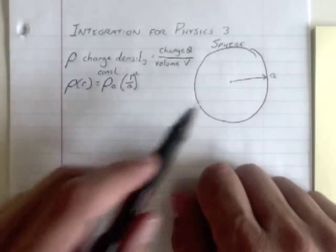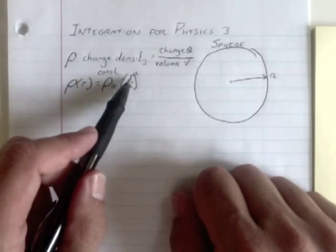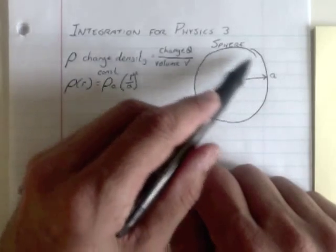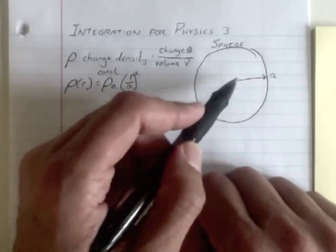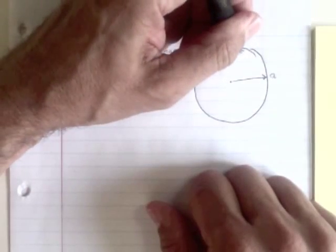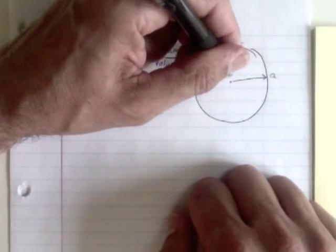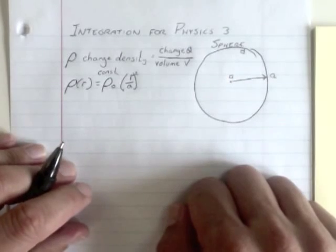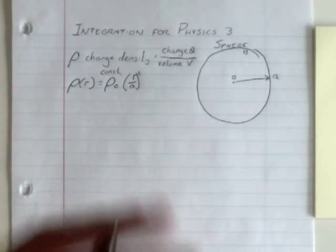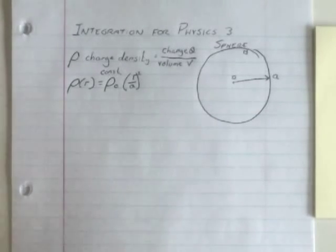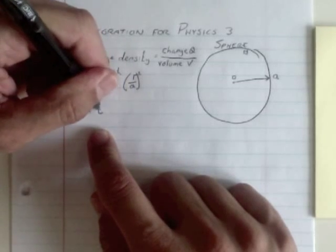In other words, if you start at the middle, R is zero, there's no charge density, there's not very much charge here. As you get farther and farther out, the charge density gets bigger and bigger, so there's more charge per unit volume out here than there is out there. We want to add up all the little elements. In this case, we want to find total charge.